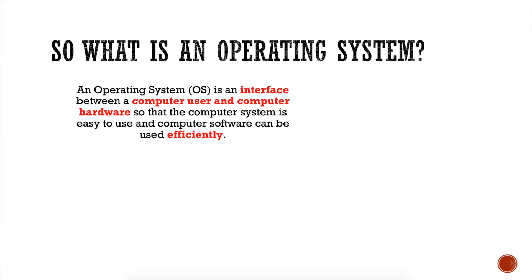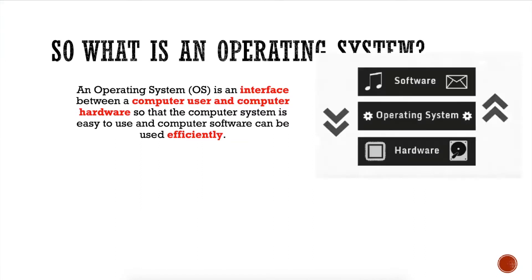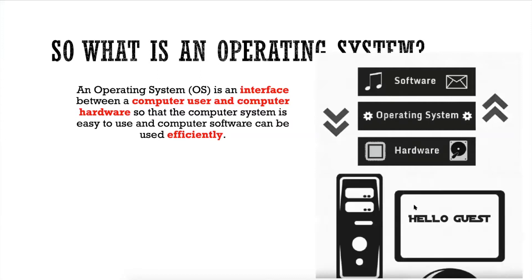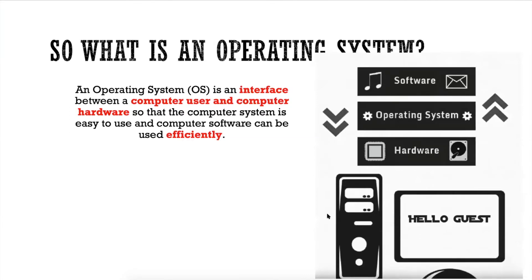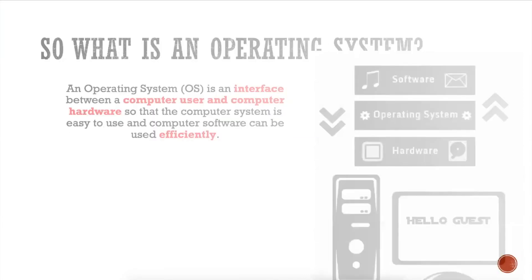The operating system is an interface between the computer user and the electronic equipment inside your computer. You will not be able to use your computer without an operating system. The operating system is the interface between hardware, software, and the computer user.